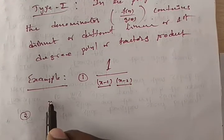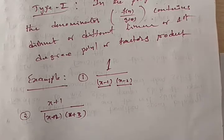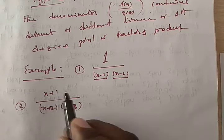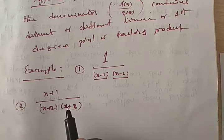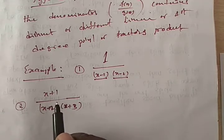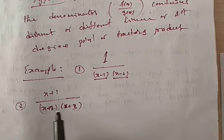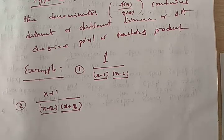Second example: (x+1) / [(x+2)(x+3)]. Clearly this is also a Type 1 problem. Numerator degree is 1, denominator degree is 2. The denominator is a product of two distinct linear factors, x+2 and x+3. Third example: (x−7) / (x²+5x+6). Numerator degree is 1, denominator degree is 2, so it is a proper fraction. Now check whether it is Type 1: the denominator should be expressible as a product of distinct linear factors.